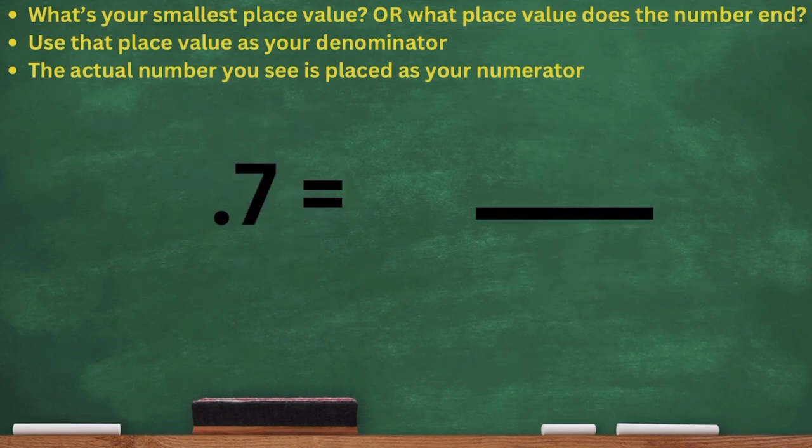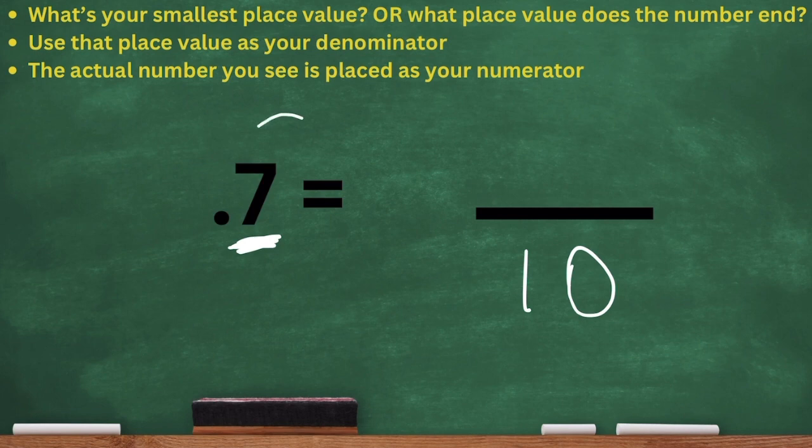Now we have 0.7, or seven tenths. Repeat the steps all over again. We just have a seven, that's it. What place value is that? That is in the tenths place. So I'm going to place the number 10 as my denominator and place the actual number that I see, which is seven, as my numerator. And that's the fraction. Wasn't that easy?